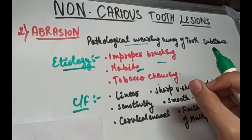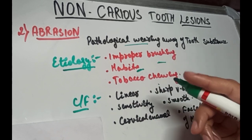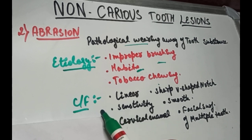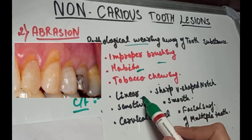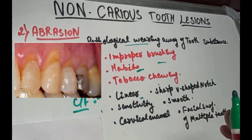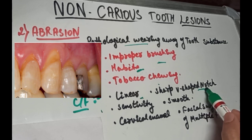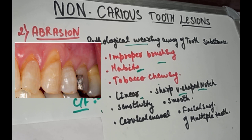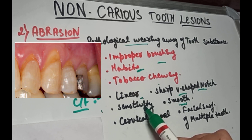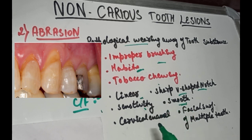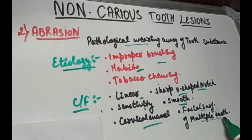Vigorous use of toothpicks between the teeth can also lead to abrasion. Toothbrush abrasion is the most common example. The lesion may be linear in outline following the path of the brush bristles and is usually seen as a sharp V-shaped notch in the gingival portions of the facial aspects of the teeth. The surface of the defect is usually smooth, the tooth may be sensitive to hot or cold, and there might be pain elicited on probing. It generally involves the cervical enamel and dentine and is usually on the facial surfaces of multiple teeth.